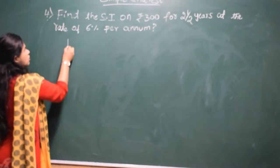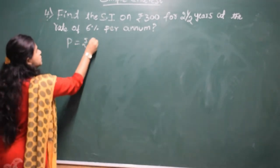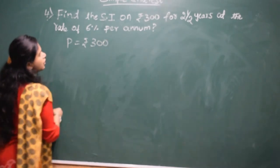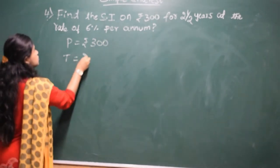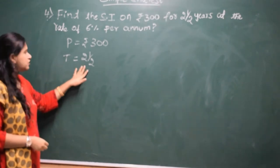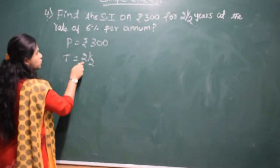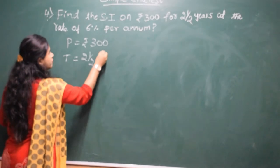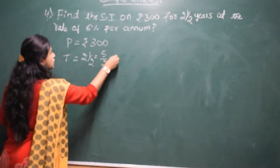Now, principle is given. Principle is Rs. 300 and the time is given, time is two and a half years. Two and a half years means we have to convert this mixed fraction to improper. Two twos are 4, 4 plus 1, 5. 5 by 2 years.